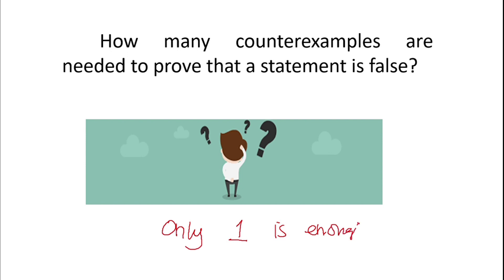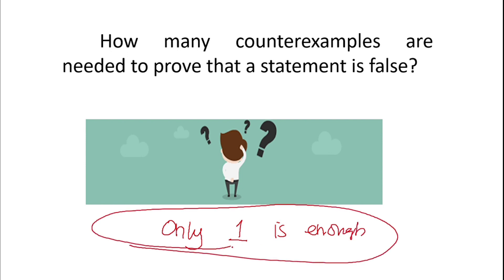The key question: how many counter examples are needed to prove that a statement is false? Only one counter example is enough to prove that a statement is false. That is why there are various possible counter examples — but one is sufficient. Answers may vary, but to disprove a statement it needs only one counter example.